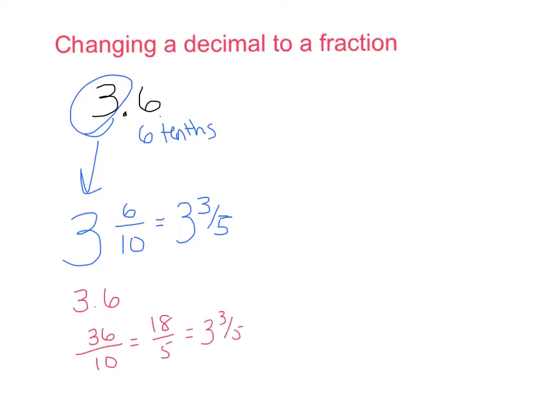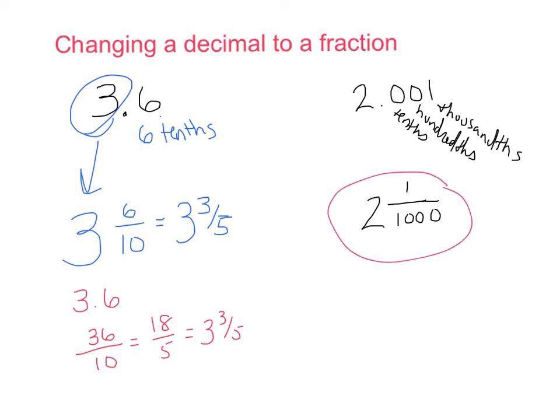So you have two options by which to proceed. So for example, if I had 2.001, this would be 2 and this would be my tenths, hundredths, and thousandths. So my answer will be 2 and 1 out of 1,000 as a mixed number.